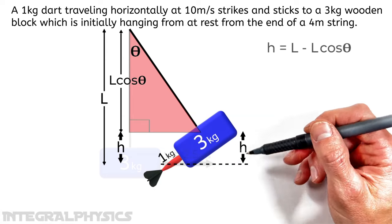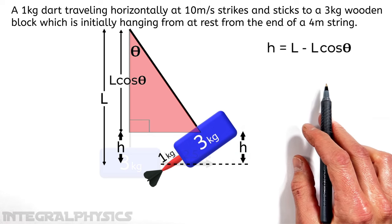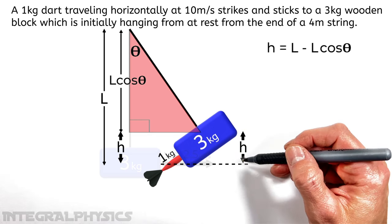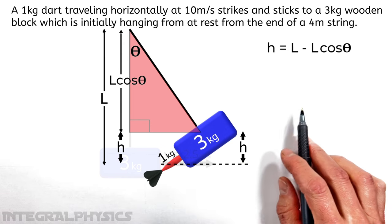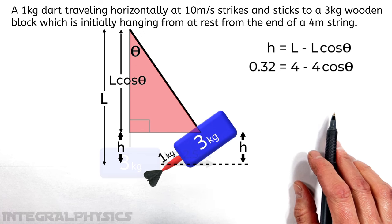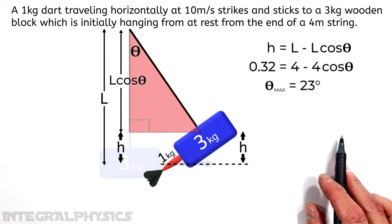Or you could say h, the height, is equal to L minus L cosine theta. Now we already know the height. We just solved for that. It's 0.32 meters. And we know the length of this string. So subbing in our values, we find the maximum angle the string is going to reach relative to vertical is 23 degrees.